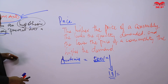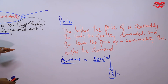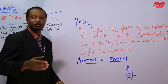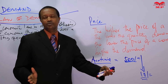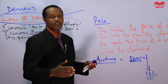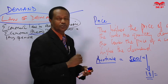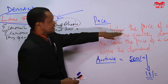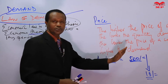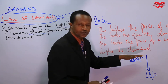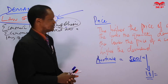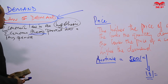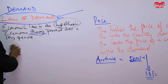If you are a businessman, you can also test it. If you are a trader selling commodities, just reduce your prices by half and observe the behavior of customers. On the other hand, double the price of the commodities you are dealing in, then observe the behavior of customers, and you will come to the conclusion: the higher the price of a commodity, the lower the quantity demanded; and the lower the price, the higher the quantity demanded. That is the law of demand.